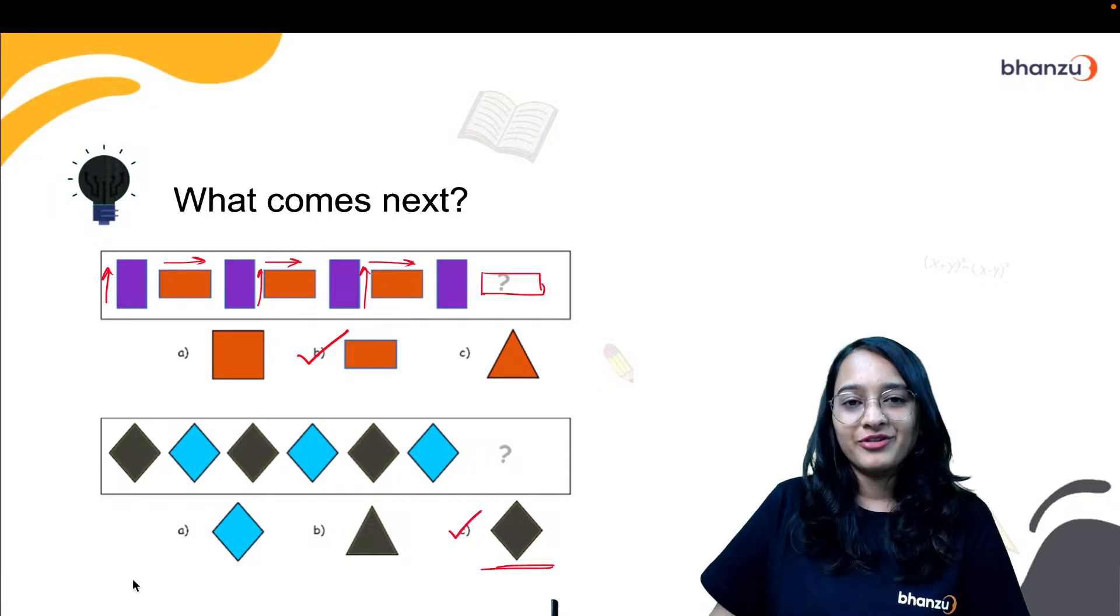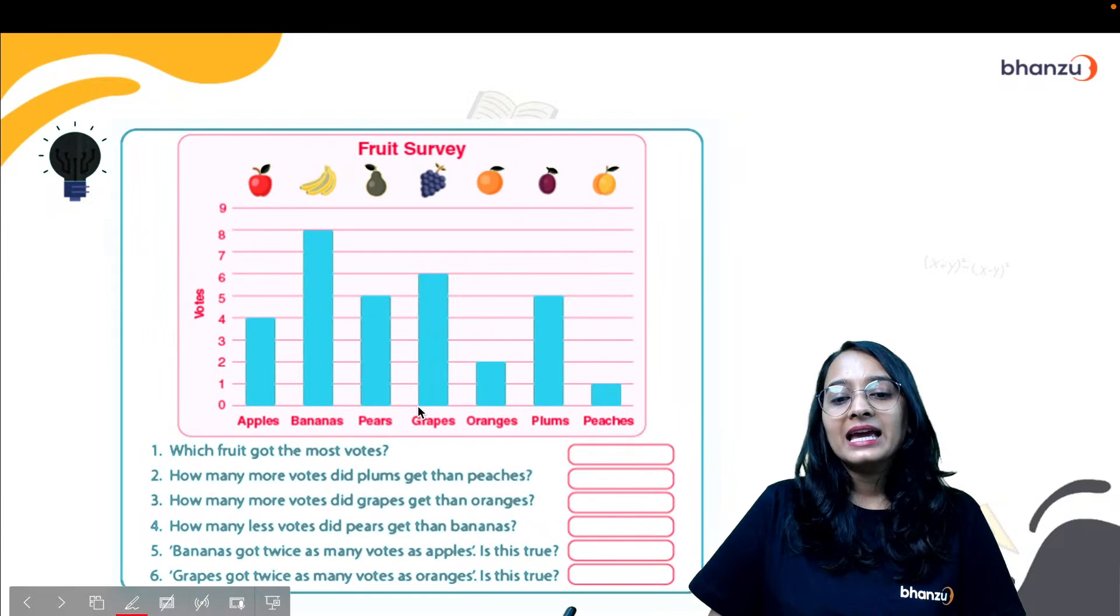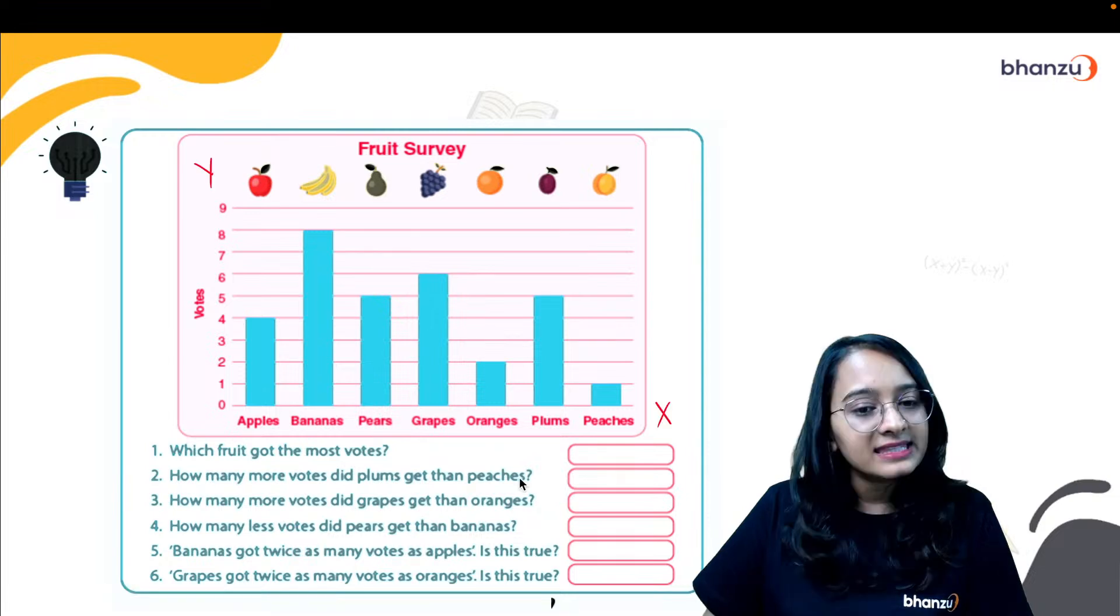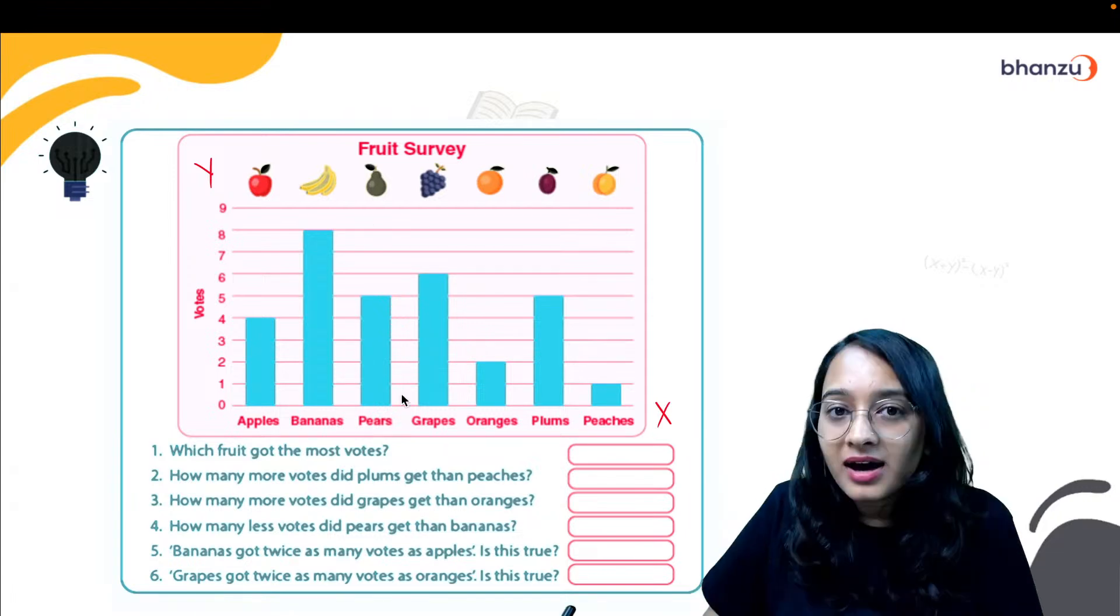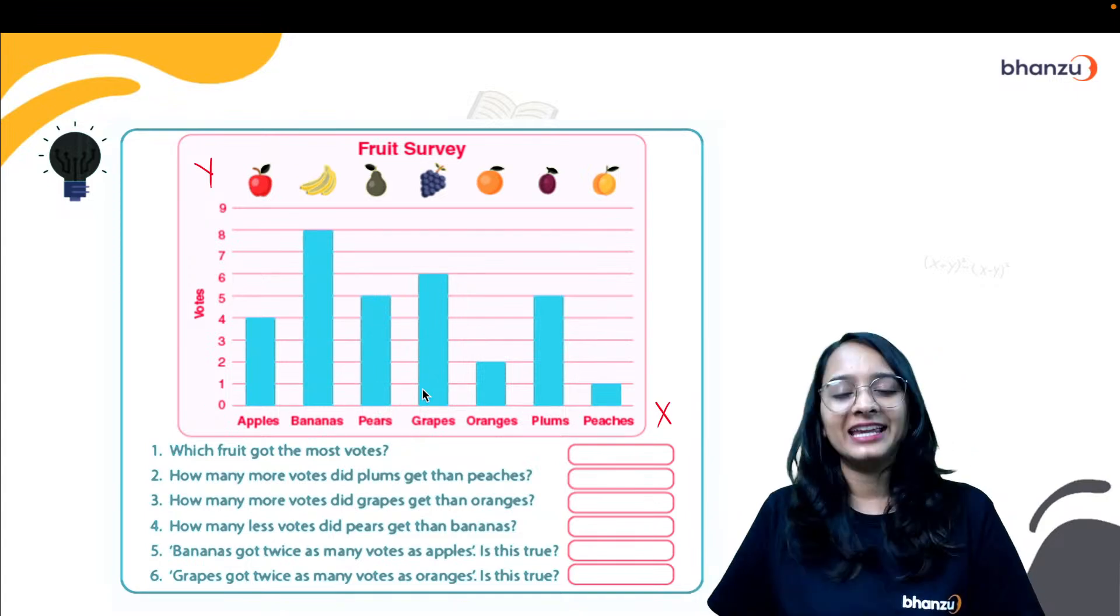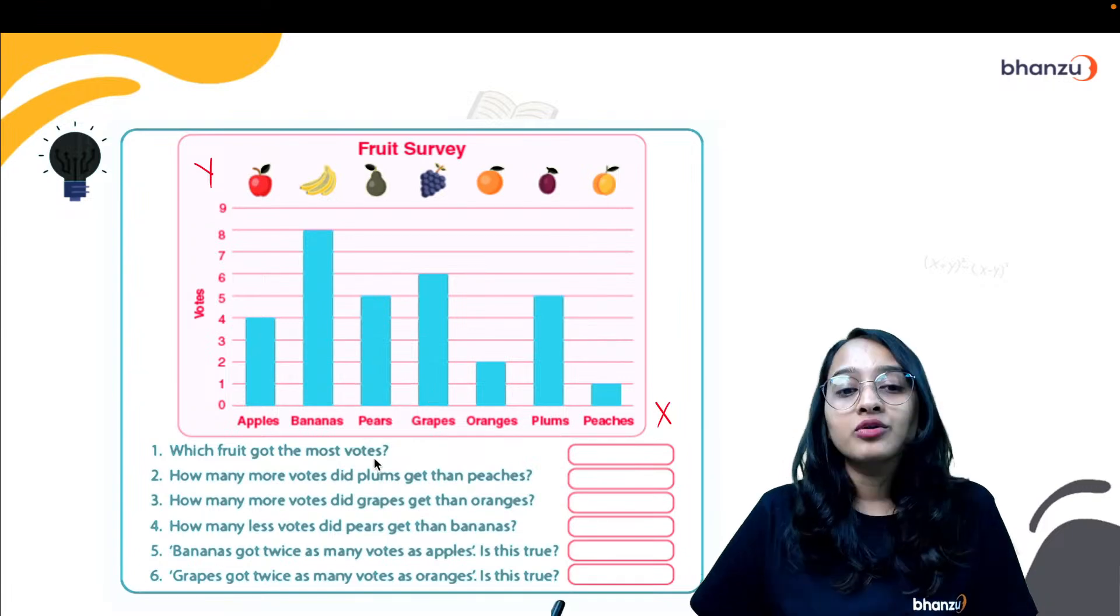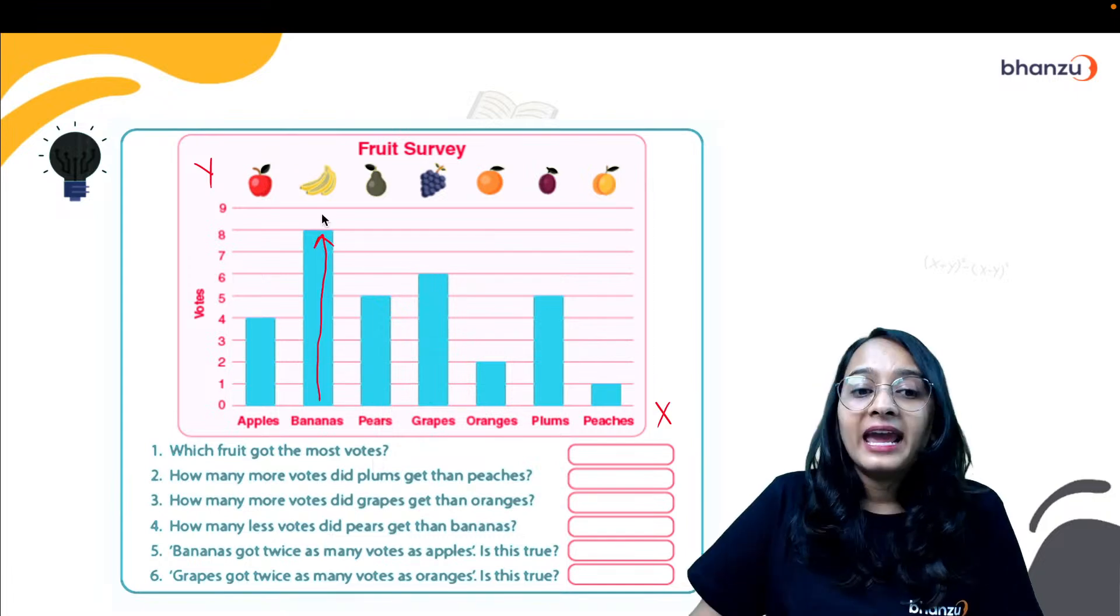And then comes the graphical method that we have seen. So here as you can see, it's called a bar graph where you have your Y axis and your X axis. So on the Y axis the votes for each fruit is given, and the height of these rectangular bars is actually called the frequency. You will be learning all of that in our chapter data handling.